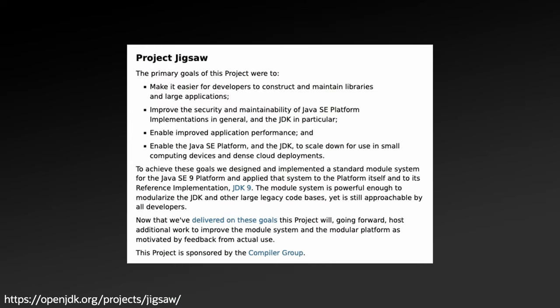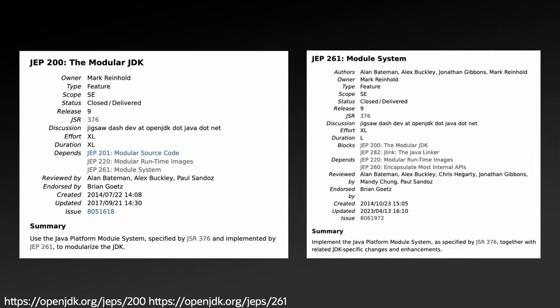Java modules came out of Project Jigsaw, which began back in August of 2008. Project Jigsaw has four big overarching goals: make it easier for developers to construct and maintain libraries and large applications, improve the security and maintainability of the Java platform, improve application performance, and enable the Java platform and the JDK to be scaled down to better fit in embedded and cloud deployments. These goals were primarily implemented through JEP 200, the modular JDK, and JEP 261, the module system.